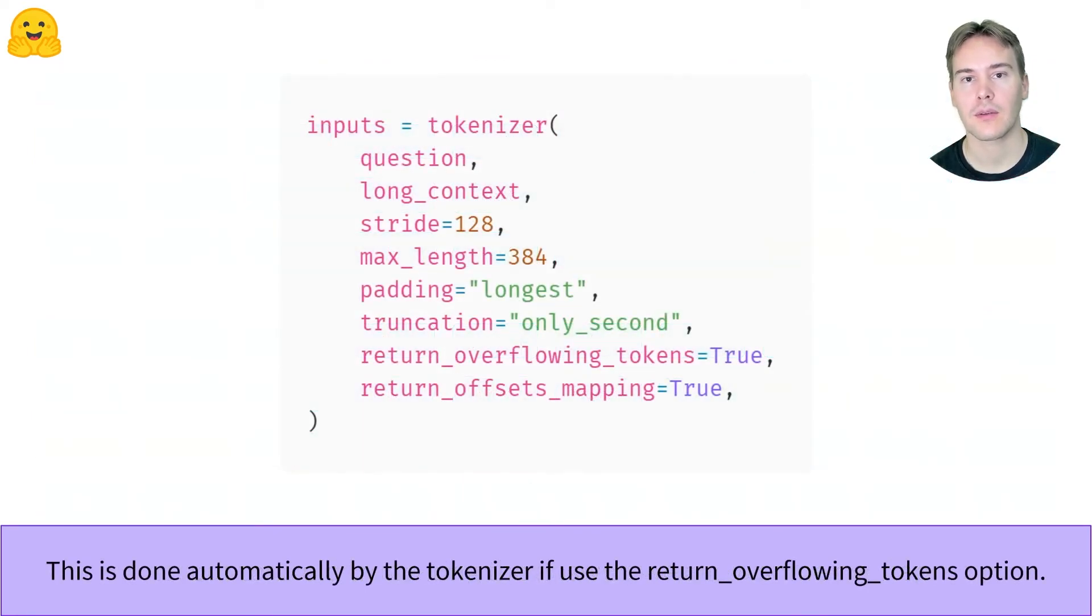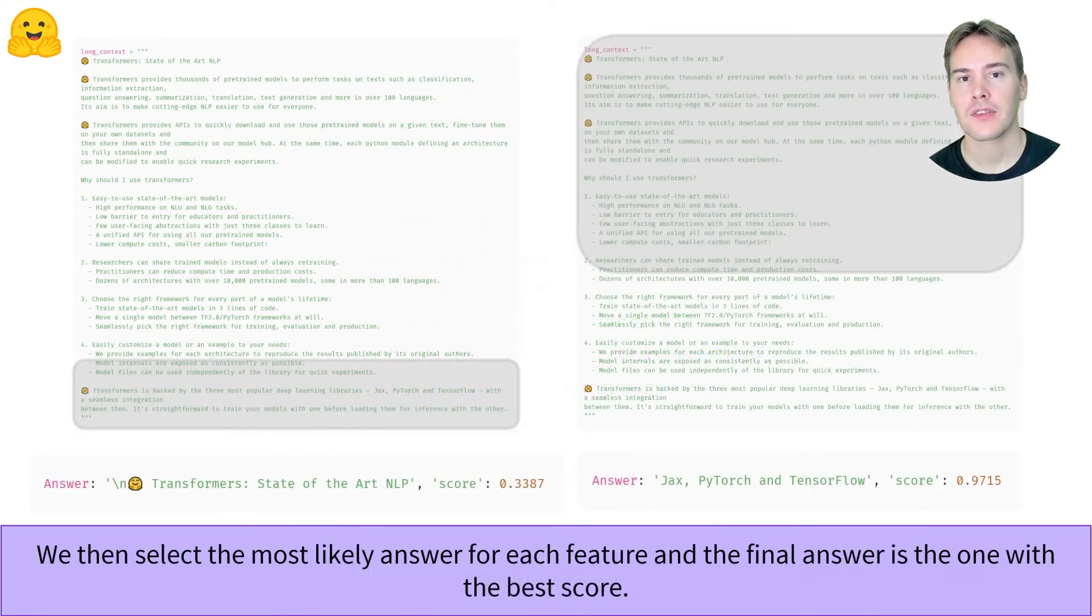The tokenizer does all of this for us automatically with the return overflowing tokens option. The stride argument controls the number of overlapping tokens.